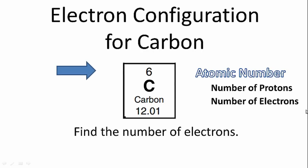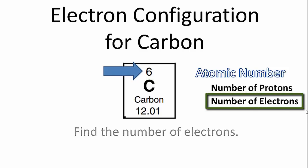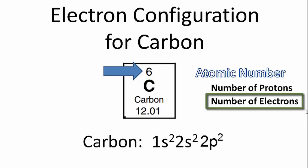That's the number above the element symbol on the periodic table. It tells you the number of protons, but it also tells you the number of electrons. And that's what we'll use to write the electron configuration for carbon.